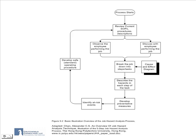The job hazard analysis process begins with a review of the current and existing standard operating procedures and descriptions of the job. This is followed by observations of the employees that may be performing the job and discussions with employees about their concerns and issues while performing the job.